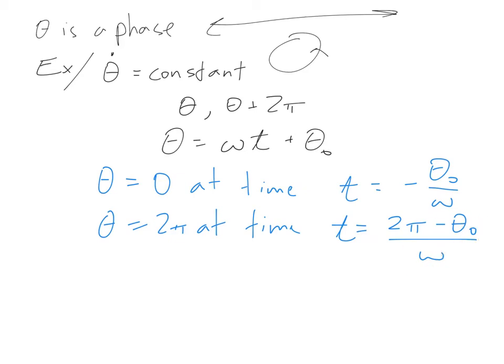So the time difference for this traversal of 2 pi is 2 pi over omega, and this is the period of the oscillation, which we'll denote with a capital T.